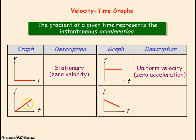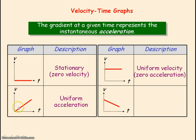For this line, you can see the gradient is constant, so that means the acceleration is constant. So the velocity is increasing at a uniform rate.